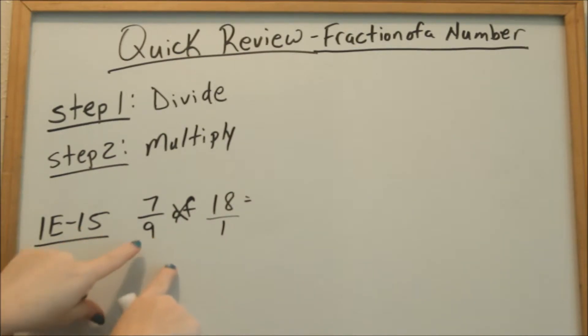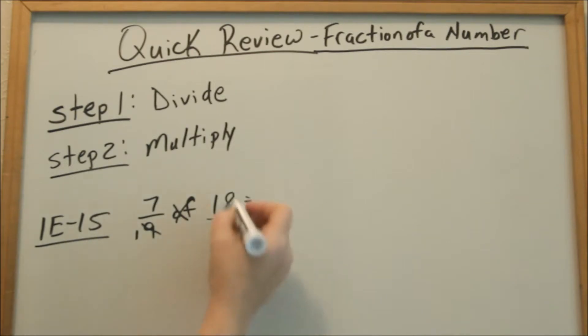So basically we can do 9 into 18 or 18 divided by 9 because we can say, okay, 9, that becomes a 1. 9 goes into 9 one time and 9 goes into 18 two times.